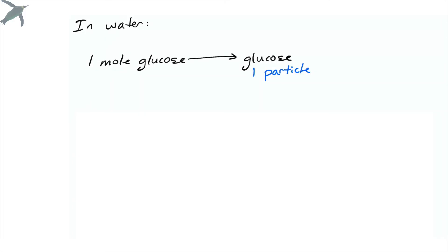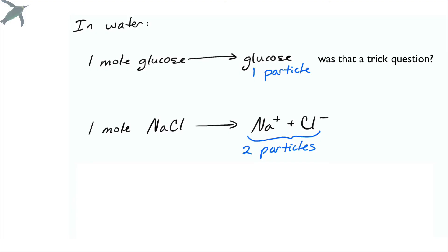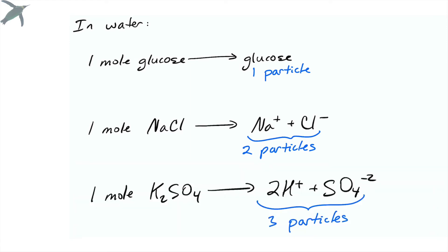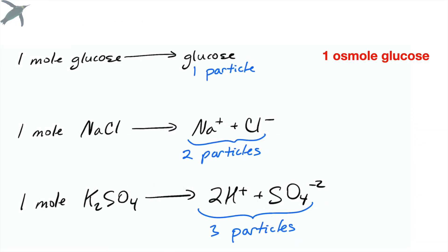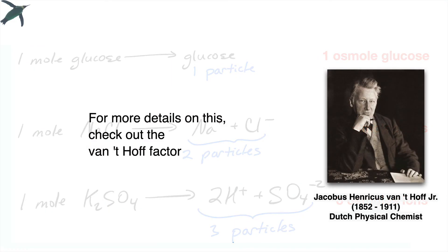One mole of glucose: when you put glucose in water, nothing happens to it. But one mole of sodium chloride will dissociate into ions — you get two particles, sodium and chloride. What about something like K2SO4, potassium sulfate? That comes apart and makes three particles. So while the number of moles of each compound is the same — one mole of each — the osmoles are different: one osmole of glucose, two osmoles of sodium and chloride, three osmoles of potassium sulfate. For osmotic pressure, it's the number of particles, not moles, that matter. Check out the Van't Hoff factor if you want more details on this.